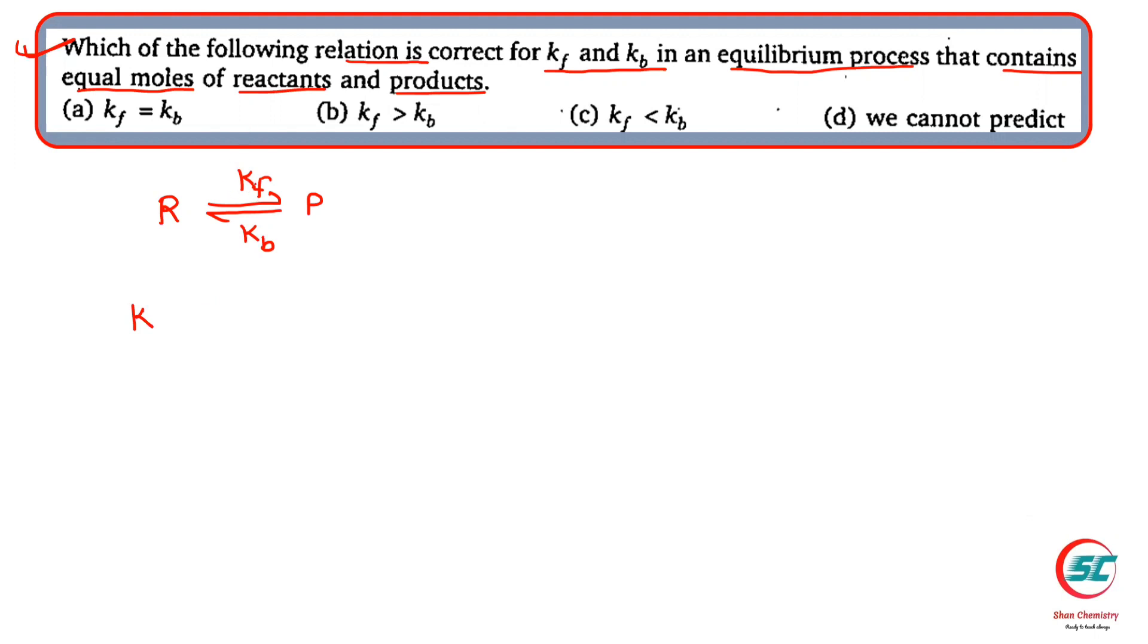If we talk about k equilibrium, what is k forward? K forward is the forward reaction rate constant. K backward is the backward reaction rate constant, but if you have the overall reaction rate constant, then it will be k equilibrium, and that is k forward upon k backward.